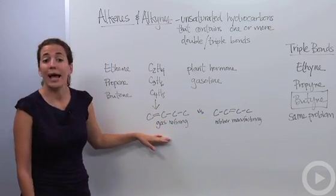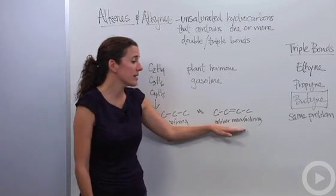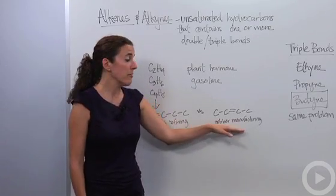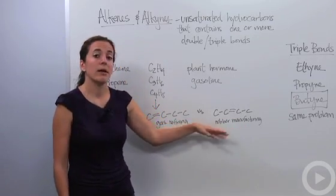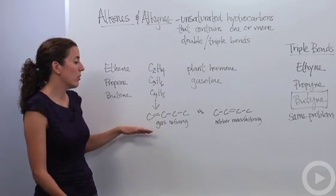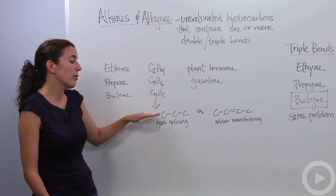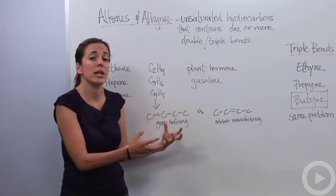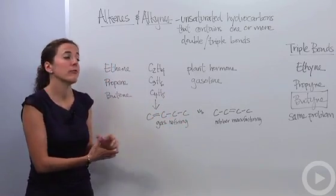This is using gas refining, and this guy is using rubber manufacturing. Very different chemical compounds, very different chemical properties. And so note, when it gets to butene, the double bond and the triple bond can actually move and change the way that these chemicals behave.